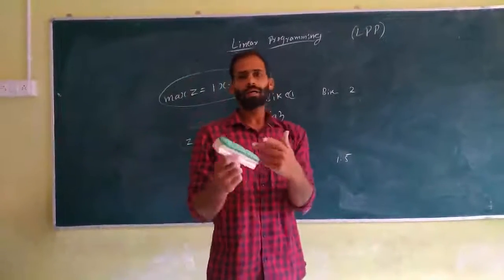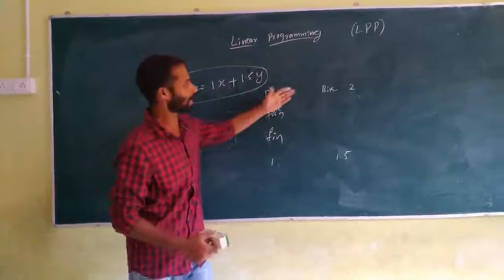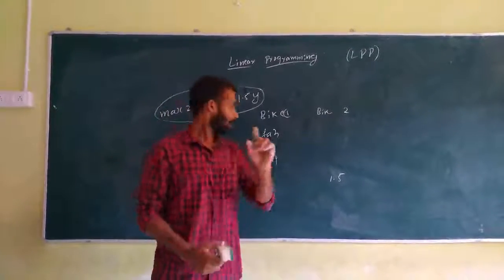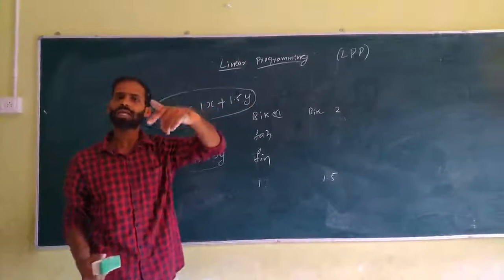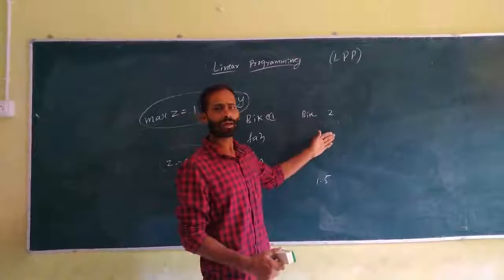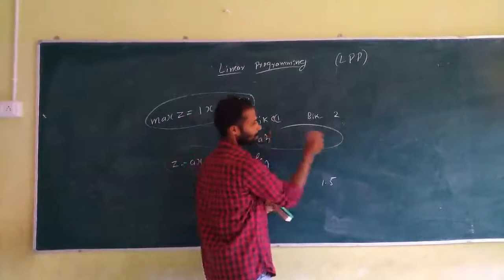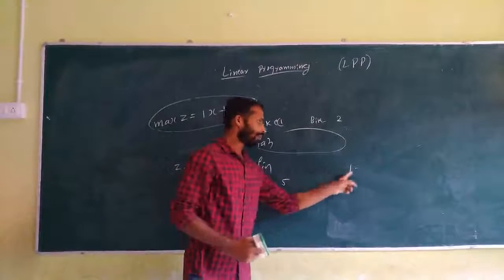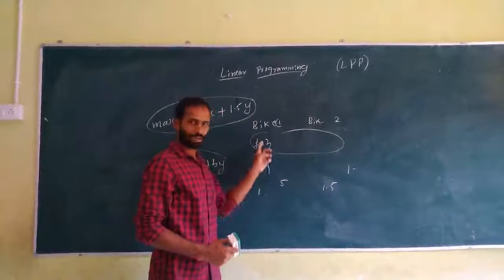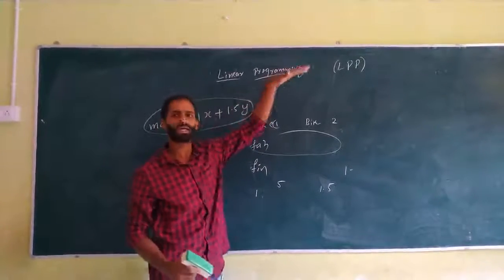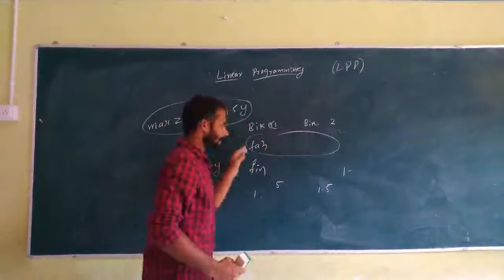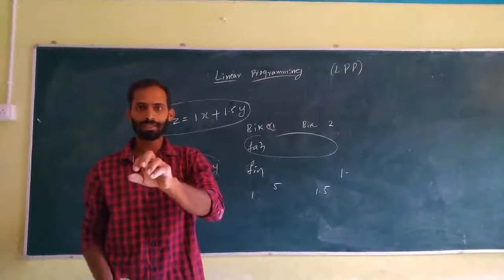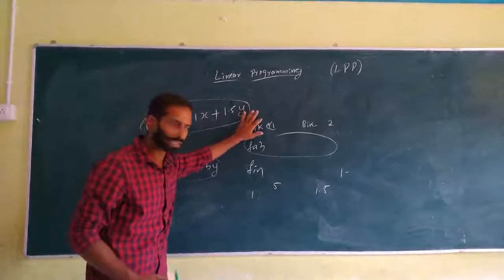For example, at most a machine can work 12 hours in a day. Those conditions are called constraints. The material availability, the machine's availability, and the workers' availability — these are all conditions. Those conditions are called constraints. Conditions are the linear inequalities.